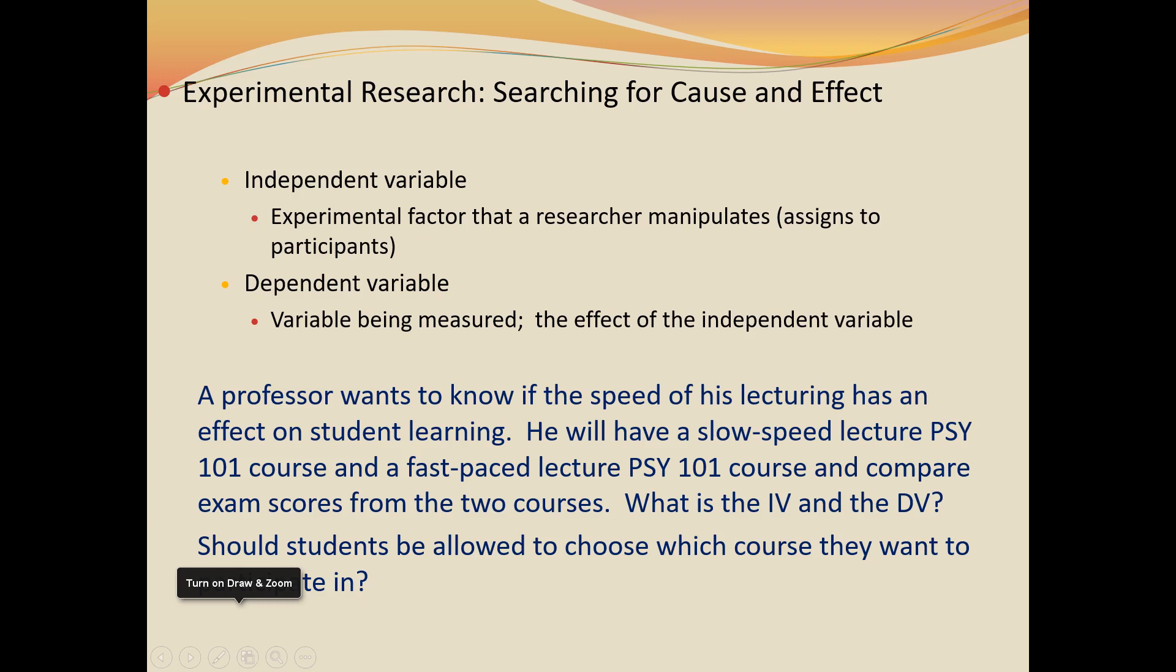So the variable that the experimenter manipulates or assigns to somebody is called the independent variable, and the variable that we're measuring, measuring the effect of the independent variable, is called the dependent variable.